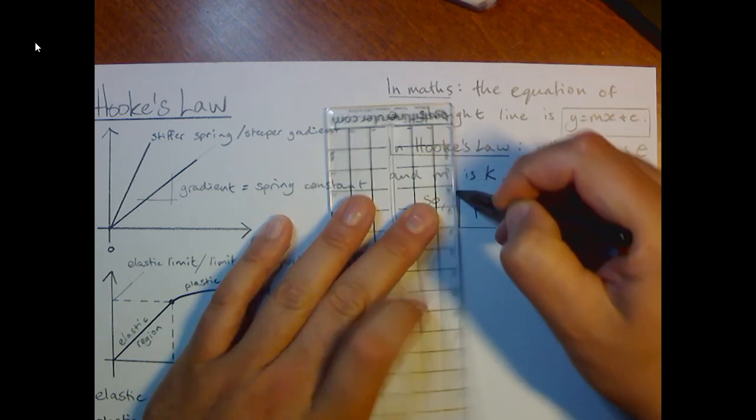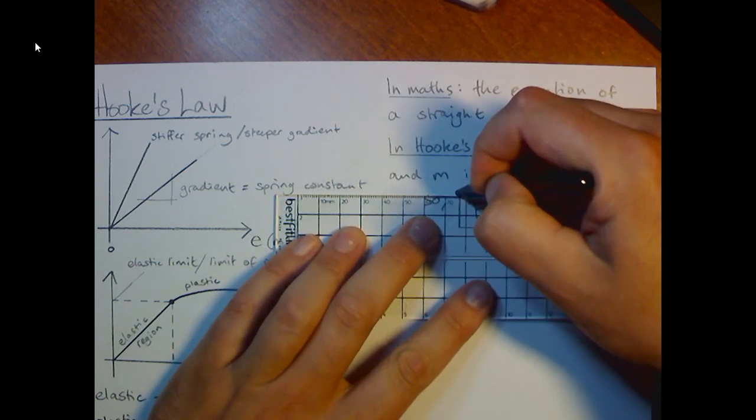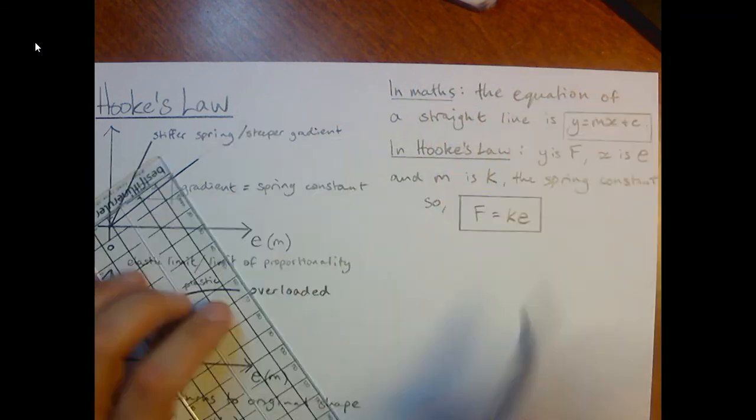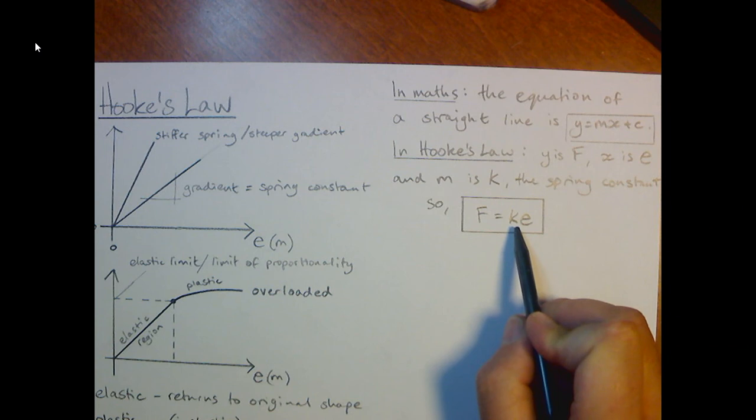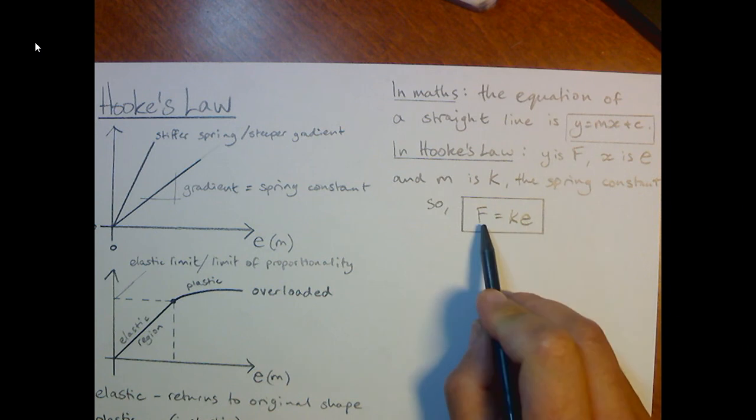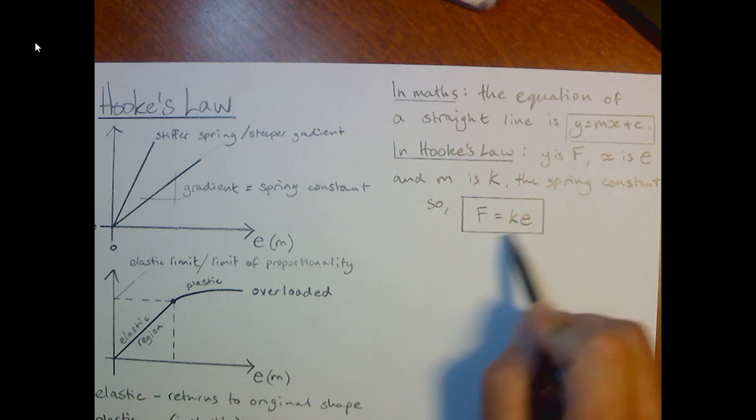It's one of the equations for physics that you may be asked to recall in an exam. And we can use it to work out any missing factor. So if we don't know the spring constant, but we know the extension we get for a given force, we can calculate it by rearranging the equation.